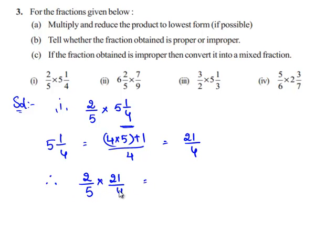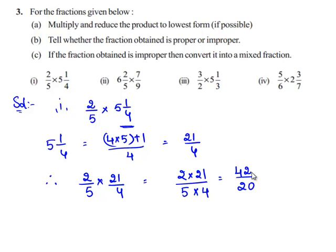The product of two fractions is equal to the product of their numerators divided by the product of their denominators. Therefore, we have 2 times 21 divided by 5 times 4, which is equal to 42/20. Since in the numerator and denominator we have 2 as a common factor, its lowest form will be 21/10. The obtained product is 21/10, which is an improper fraction because the numerator is greater than the denominator.